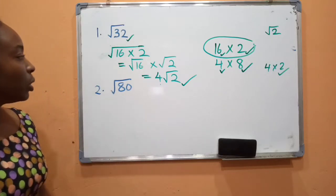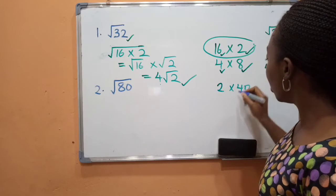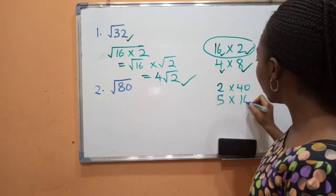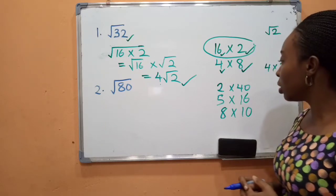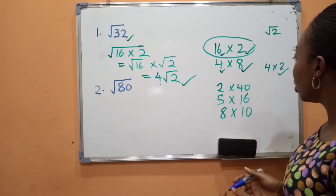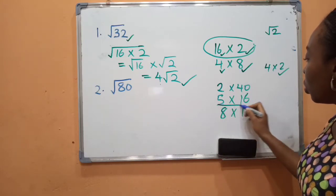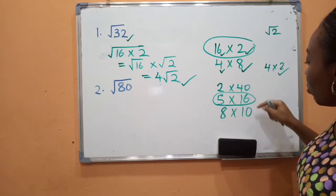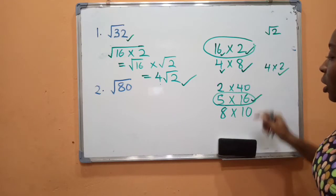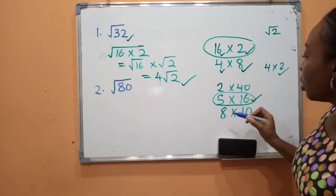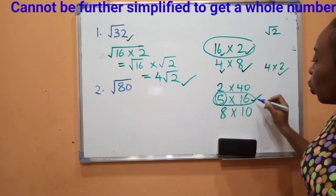Now let's take a look at the second example. Let's try to figure out the possible factors of 80. We have 2 times 40, we have 5 times 16, and we have 8 times 10. Remember the first condition says we need two multiples and one must be a perfect number and the other should not be a perfect number. The one that has a perfect number is 5 times 16 — we only have one that has a perfect number, so that makes things easy. The second condition states that the number that is not a perfect number cannot be further simplified. If you look at 5, you know that it cannot be further simplified, so we are going to pick this.